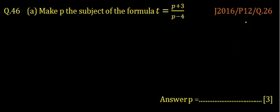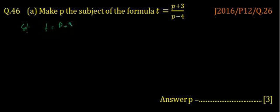Question 26, paper 1. We are going to do June 2060. Make p the subject of the formula: t is equal to p plus 3 divided by p minus 4. The equation is t equals p plus 3 divided by p minus 4.